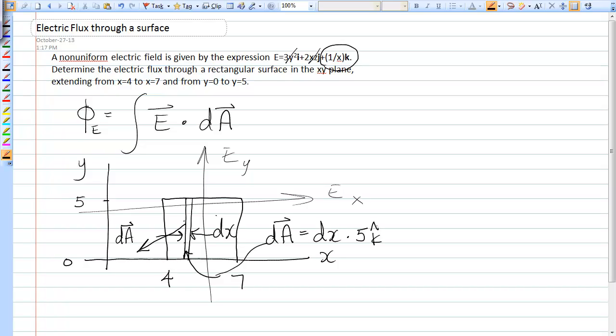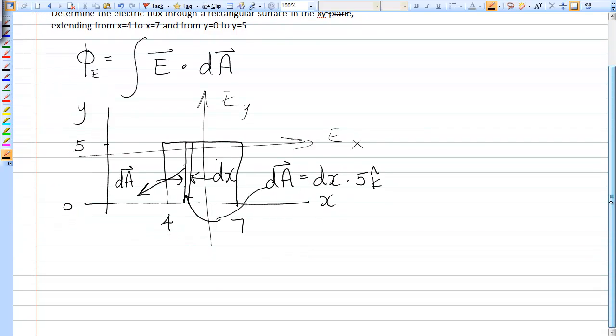Now, when you go to dot the electric field with the area vector, you'll see you only pick up these k-hat components.